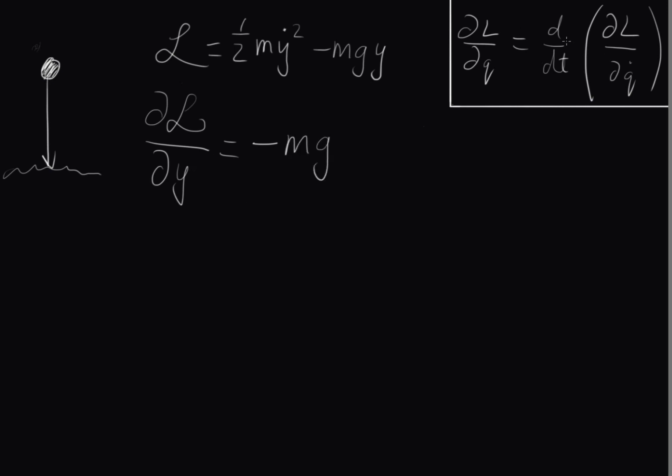Now let's have a look over here. We want the time derivative of the derivative of the Lagrangian with respect to dq dot. So let's first of all take the derivative of the Lagrangian with respect to dy dot. Again, same thing, we get m y dot.